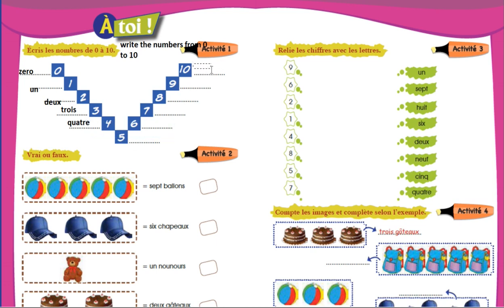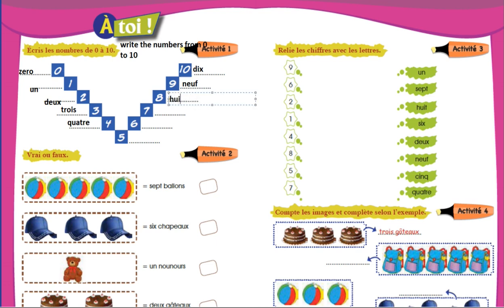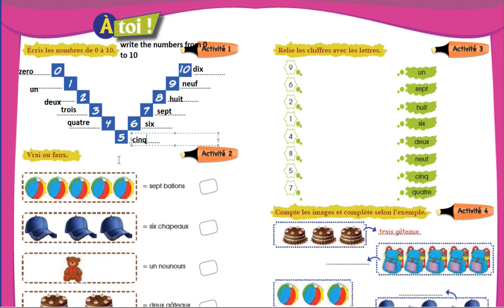Now here, this is ten, and ten we say dix. Dix. Then neuf, huit, sept, six, cinq. We have done this activity. Now moving to Activity Two.